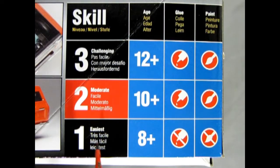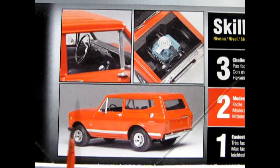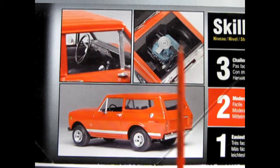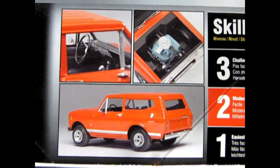Now this skill level 2 kit came out from RC2 back in 2004, intended for the moderate model builder, ages 10 and up. Glue and paint are required. Here we have some pictures of the model as built by AMT, and you can see inside the interior and the International Scout engine as well as the rear three-quarter profile of the truck.